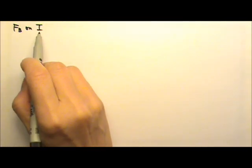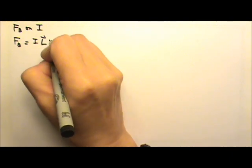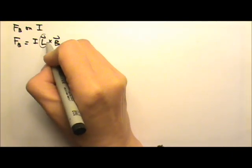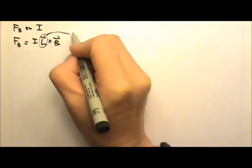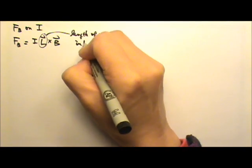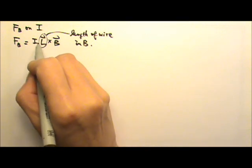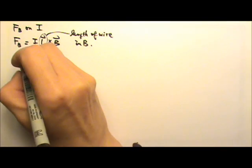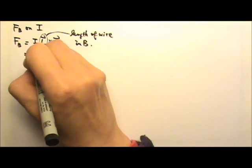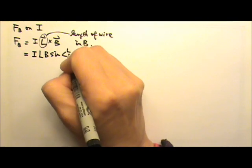Because electric current can produce a magnetic field, a current in a magnetic field can experience a magnetic force. To find that magnetic force, we can use I L cross B, where L is the length of the current wire that is inside the magnetic field. This length takes on the direction of the current, and the cross product means the magnetic force can be found using I L B times sine of the angle between L and B.